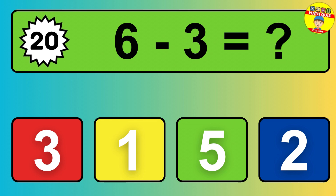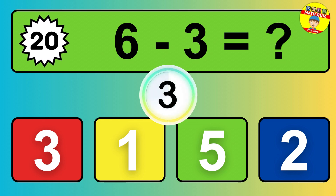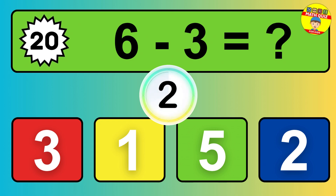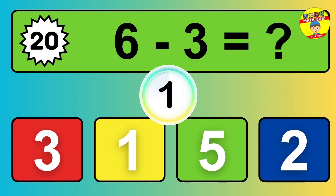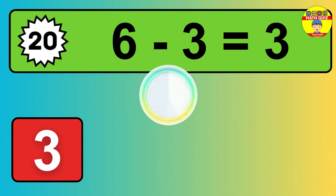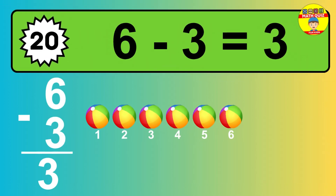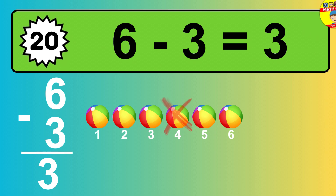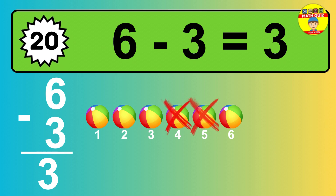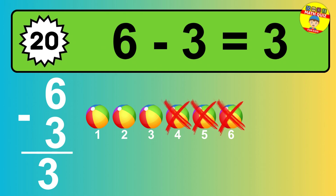Question 20: 6 minus 3 equals what? The answer is, 6 minus 3 is 3. Let's count it: 1, 2, 3.